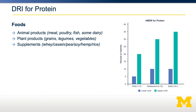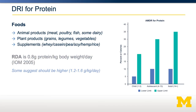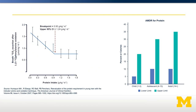Let's return to the DRI for protein. Shown here is the acceptable macronutrient distribution range for protein, and the RDA for protein is set at 0.8 grams of protein per kilogram of body weight per day. This was set by the Institute of Medicine in 2005. If we return to the previous study where we looked at the breakpoint across multiple people, let's compare that result to what was used when the RDA was set.